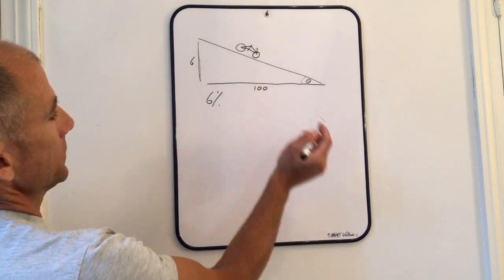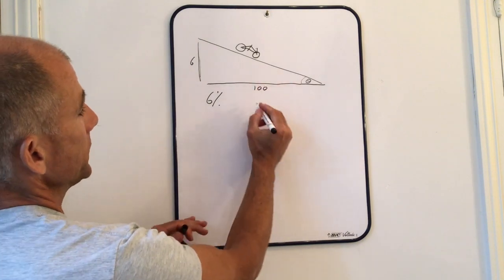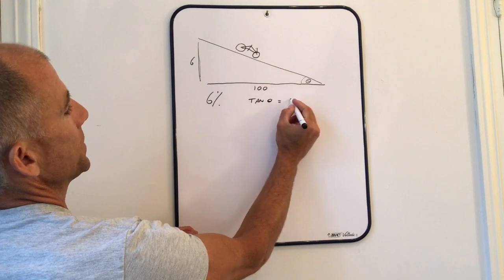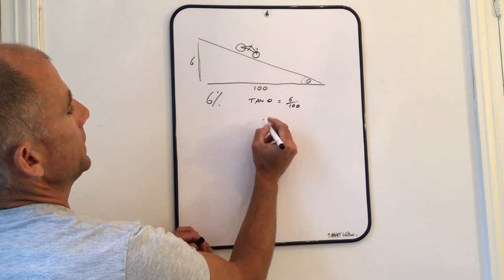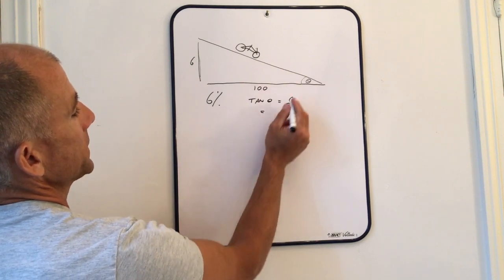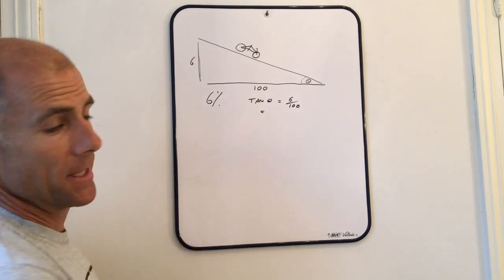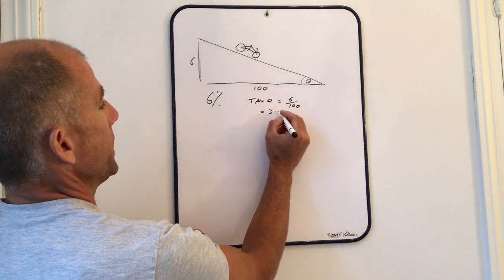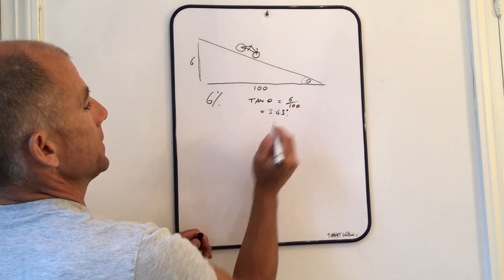So, a bit of basic trigonometry. Tan theta is opposite over adjacent, so inverse tan 0.06, and what it comes out as is 3.43 degrees.